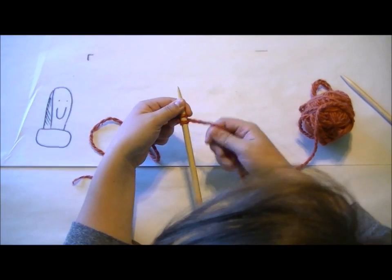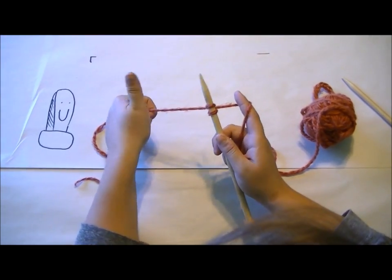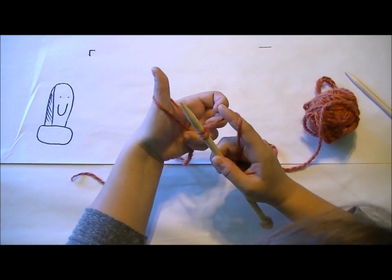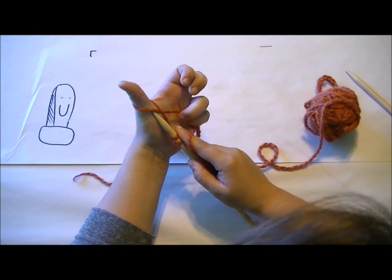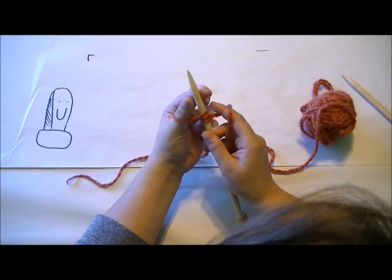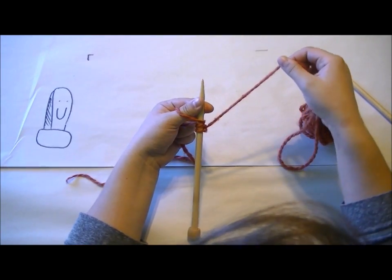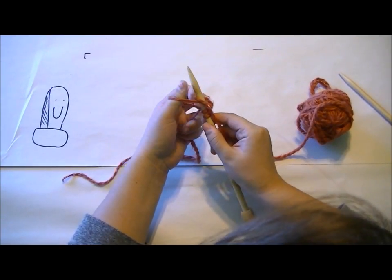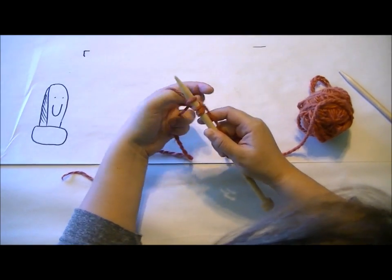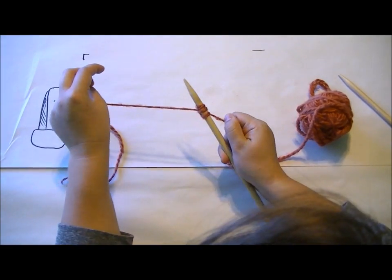So let me show you again. Thumbs up, go over and back, poke that needle through that loop, pinch the needle, take this yarn, wrap from back to front, take this old loop, take it over and pull.